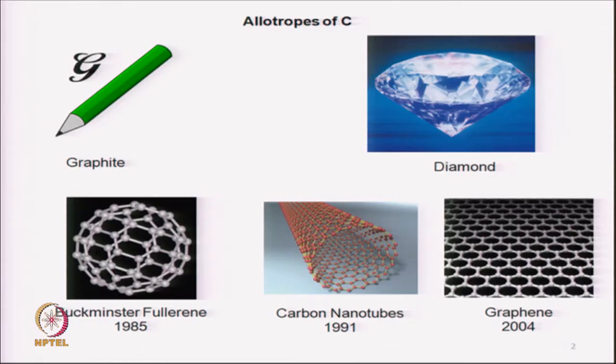Today we will discuss the structure of graphite. In the last video, as you had seen, we have seen various polymorphs of carbon or allotropes of carbon. As a revision I show you the slide again.